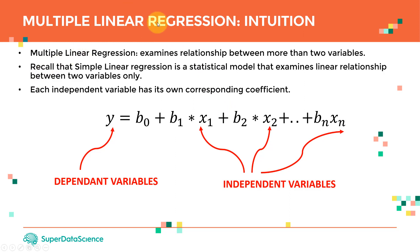So in multiple linear regression, instead of having two variables, we're going to be dealing with more than two variables. Recall that simple linear regression is a statistical model that examines the linear relationship between two variables only. Here, in multiple linear regression, we're going to be dealing with more than two variables.